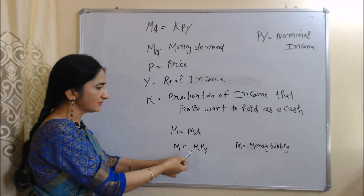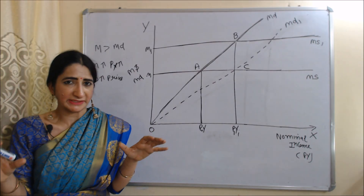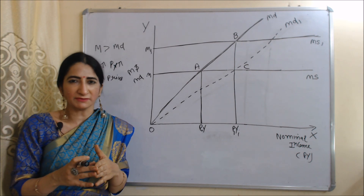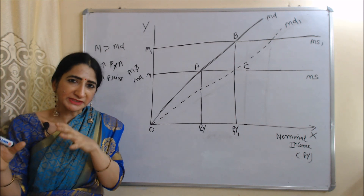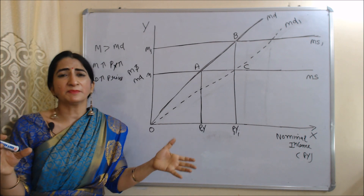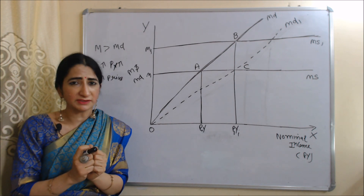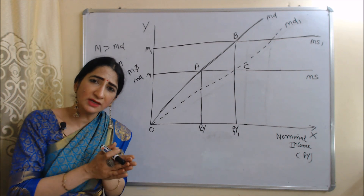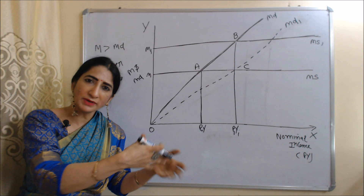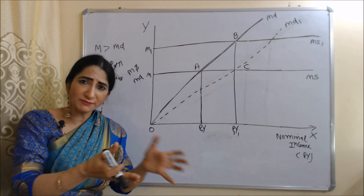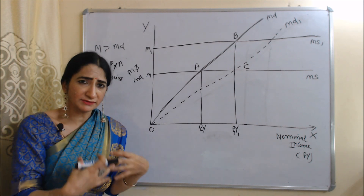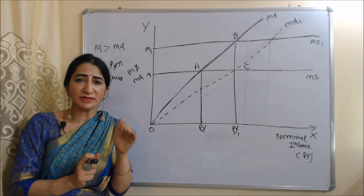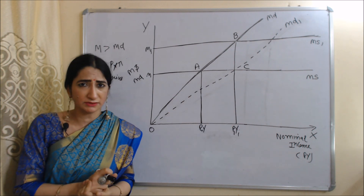According to this theory, at a given money demand, if only money supply increases, then prices of goods and services will also increase. Why? When money supply increases, there is more money in the economy; employers have more money to pay, so nominal income increases. When income increases, demand for goods and services increases, and if demand keeps increasing, prices of goods and services will also increase.